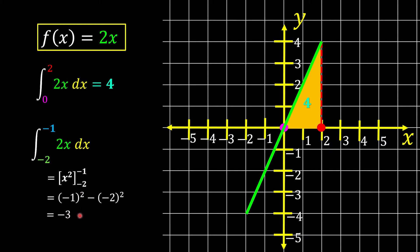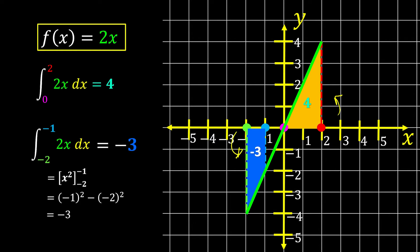Why do we have a negative number this time? Setting the boundary from negative 2 to negative 1 and drawing the region bounded by the x-axis, the blue region represents negative 3. This is because we take slices with reference to the x-axis: whatever is above the x-axis is positive, and whatever is below is negative. If we want the area, we take the modulus of negative 3, giving us 3 square units. Area cannot be negative, so always take the modulus of the answer when counting area.